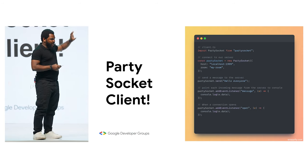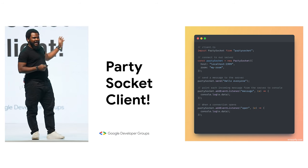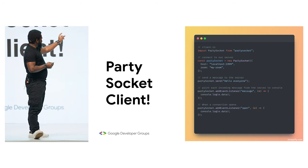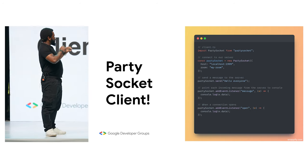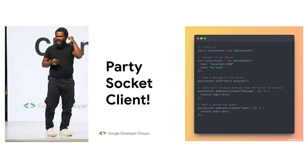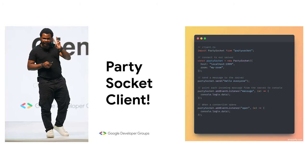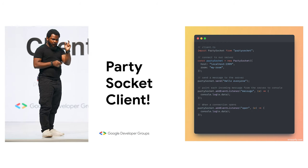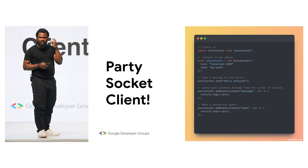This is the client part, which is the PartySocket client. In the PartySocket client, on the second line, you can see that we are instantiating a PartySocket instance. There are two things that are very important: you have the URL of the PartySocket, and then you have the ID of the room.